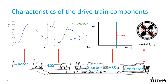Here you see a recap of the torque-speed characteristics of the different components. Neglecting losses in the main bearings, the aerodynamic CQ-lambda curve can be directly translated to the speed-torque curves in the low-speed shaft. Similarly, the speed characteristics of the generator can be directly translated to the speed-torque characteristic in the high-speed shaft. However, the speed and torque levels in the two shafts differ several orders of magnitude, due to the separation by the gearbox.